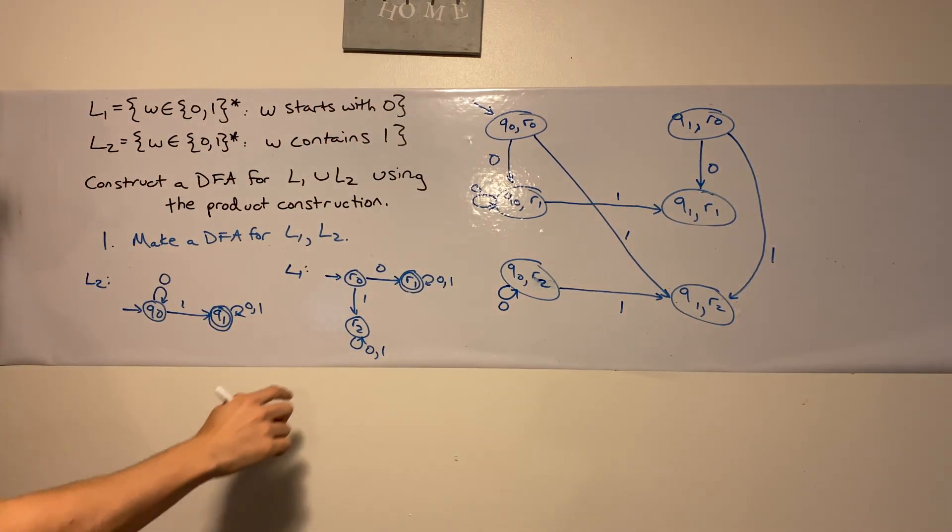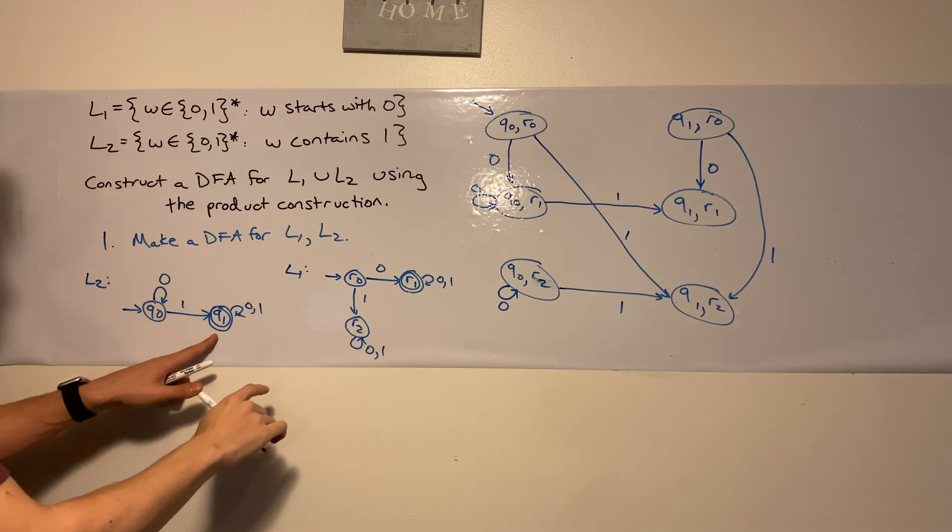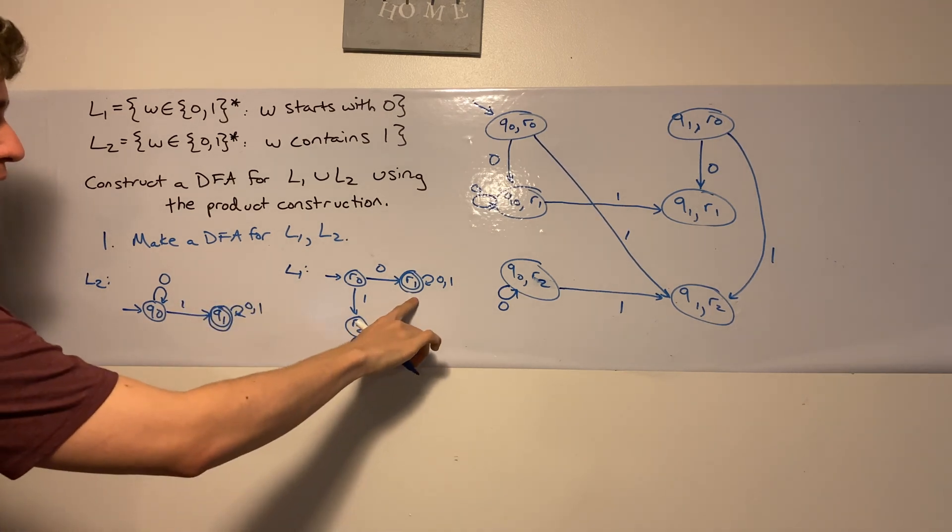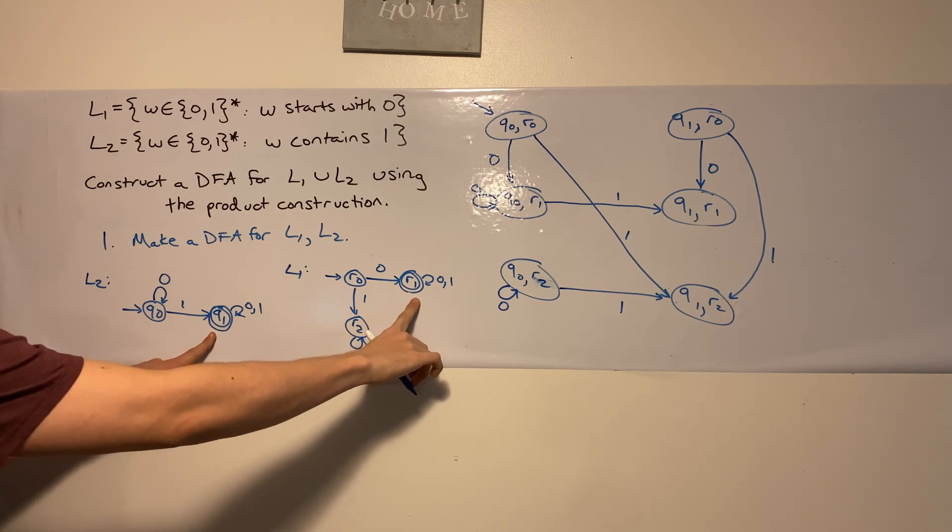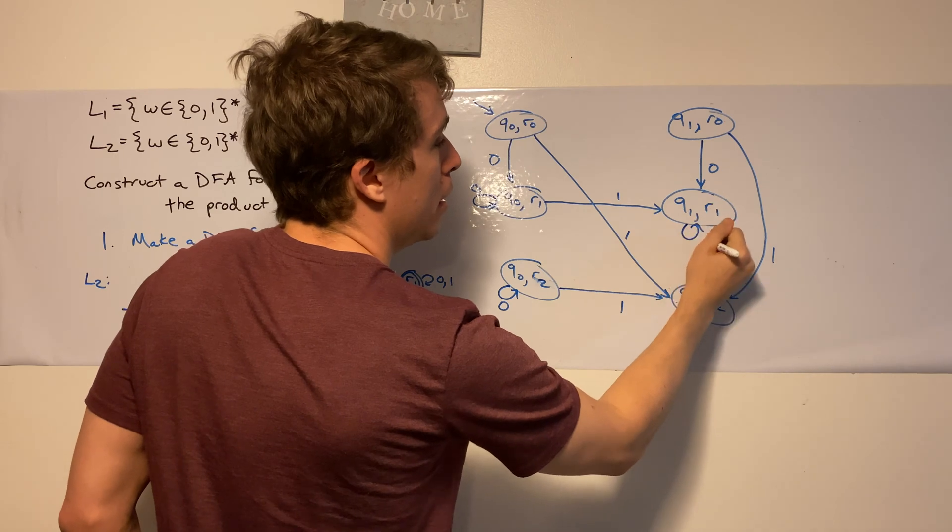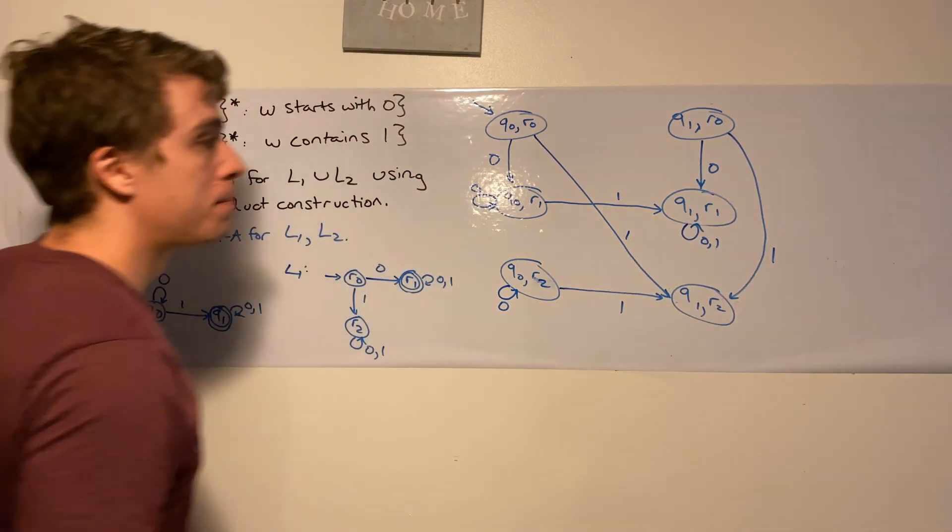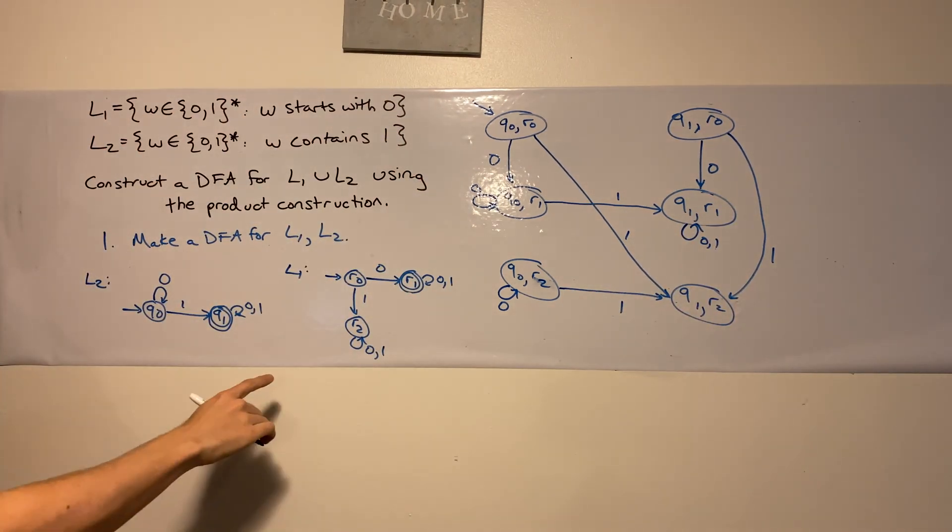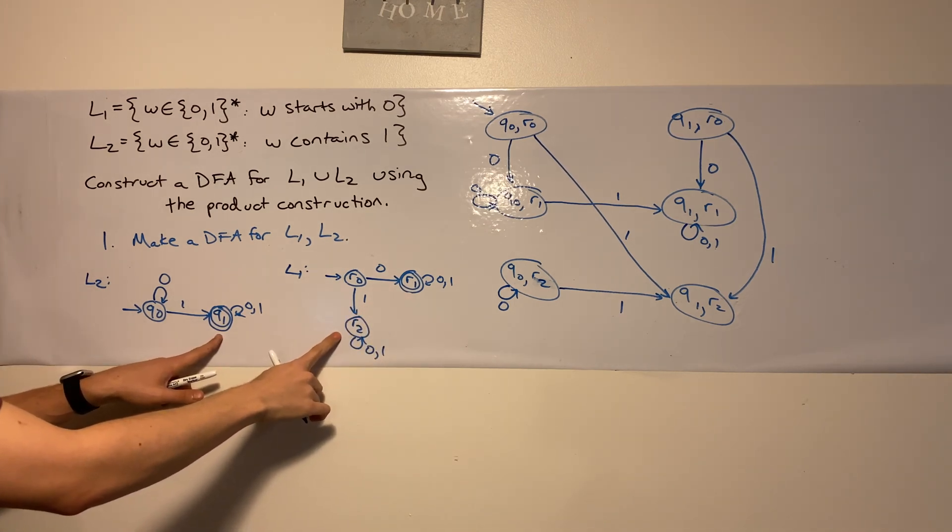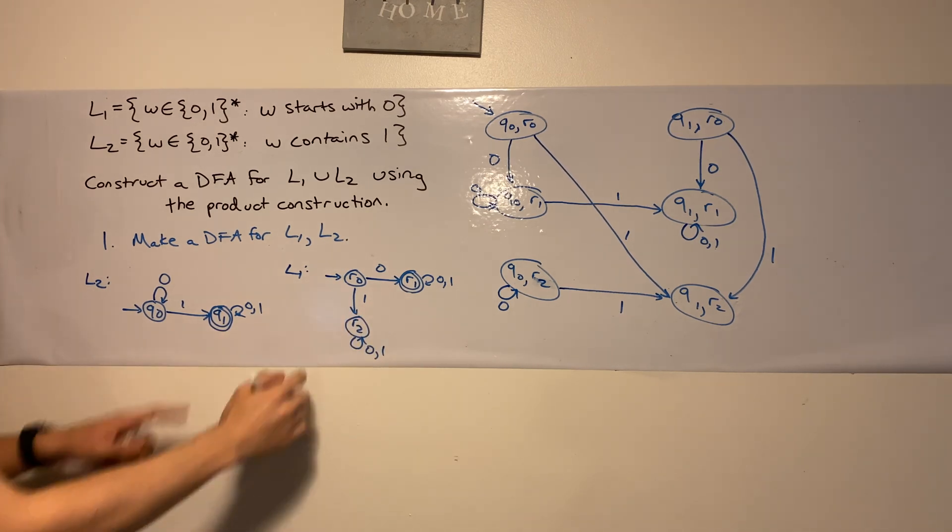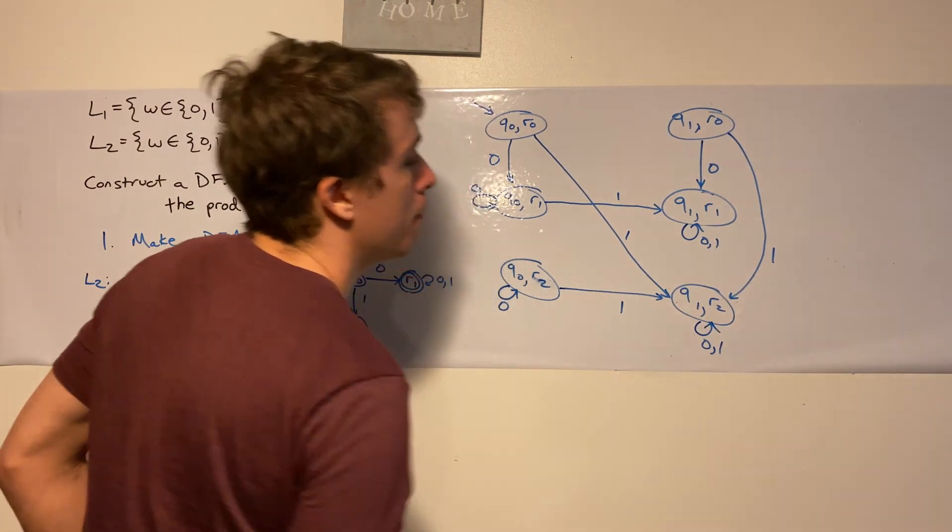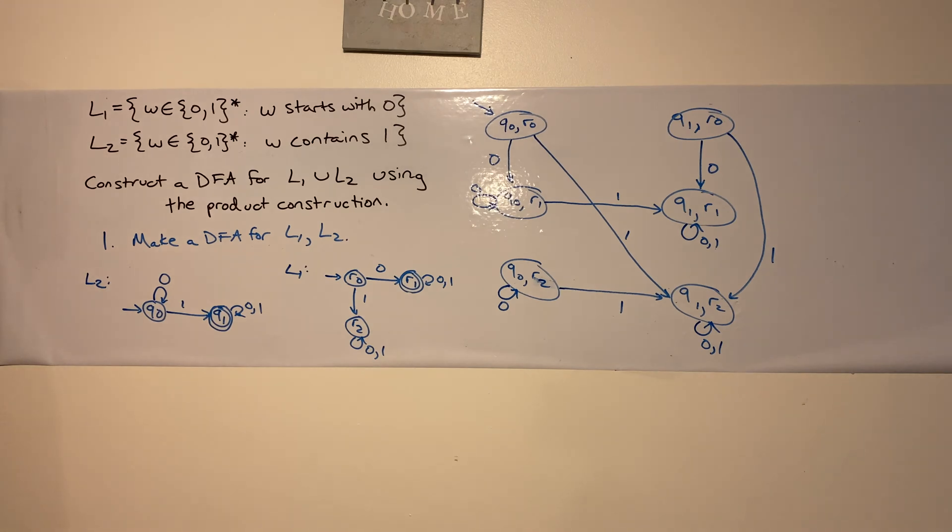q1, r1, where do I go? So q1, I stay in q1. r1, I stay in the same state. And if we look at this pair, actually, it's self-loop on 0 and 1. So here I'm going to self-loop on 0 and 1. So then we handle that pair. Let's do this pair. Again, both states self-loop on 0 and 1. So let's self-loop on 0 and 1.